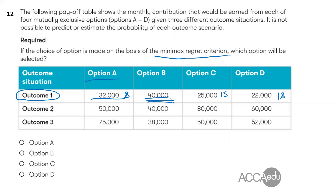If outcome 2 occurs, the highest contribution is $80,000. Choosing option A gives $30,000 regret; option B gives $40,000 regret; and continuing the same analysis, option D gives $20,000 regret. For outcome 3, the lowest contribution comes from option A, so there's no regret for option A. Option B has $37,000 regret, option C has $25,000, and option D has $23,000 regret.